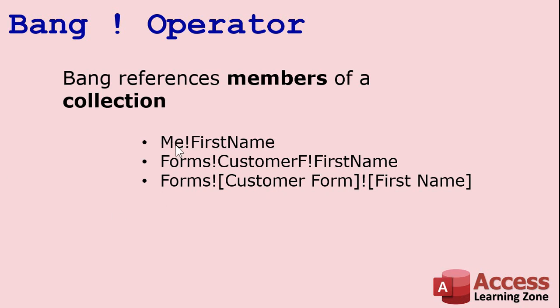Me is a form and it has a collection of controls, and in those controls there is one called FirstName. Technically you could write this as me.Controls.Item("FirstName"). Bang is shorthand for that — it means FirstName is a member of that collection. FirstName is a member of a collection of fields on the Customer form, which is itself a member of the Forms collection.